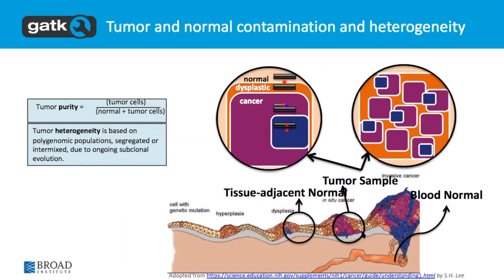The complication that we're dealing with in the cancer context is that when we're sampling the tissue, we're not sampling a pure clone — we're sampling a mix of cells. And depending on the skill of the person doing the sampling, the complexity of the tumor, and the stage of progression of the disease, we'll have more or less heterogeneity in terms of both the mix of tumor and normal tissue that we're collecting. And also within the tumor tissue, there's heterogeneity of different subclones with different mutations in them.